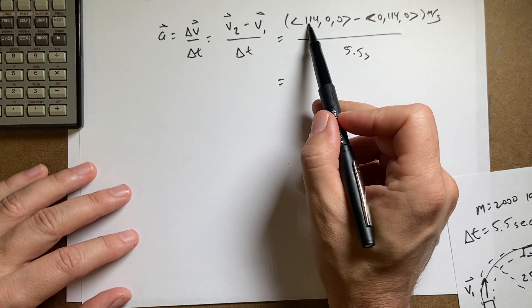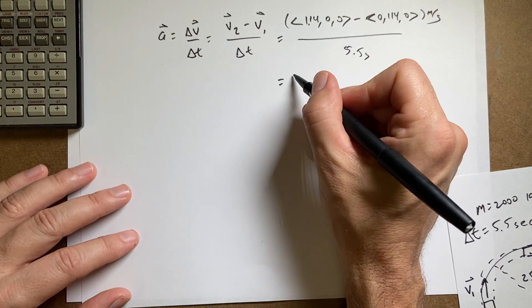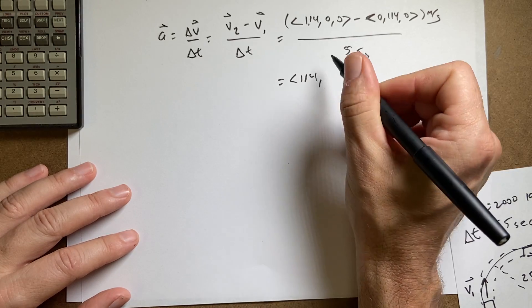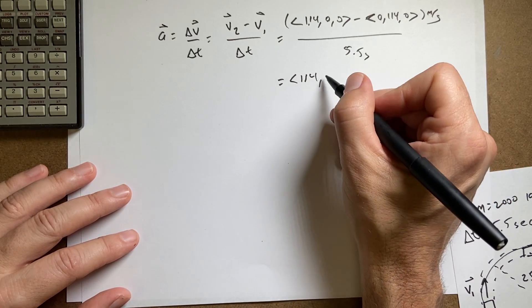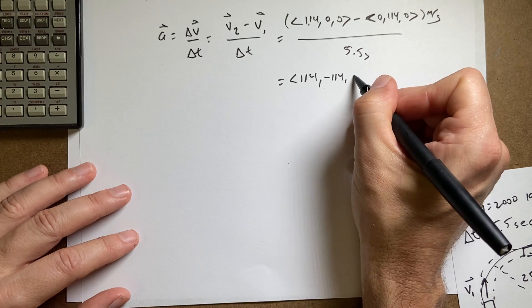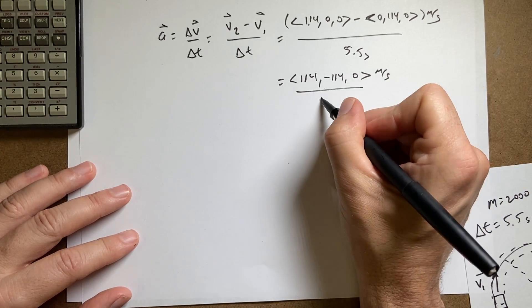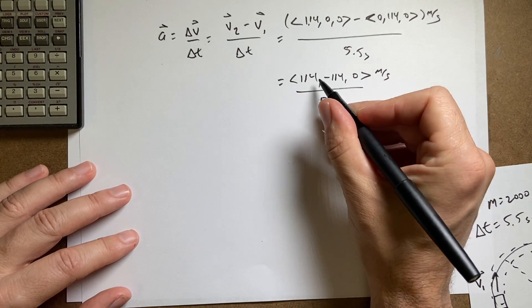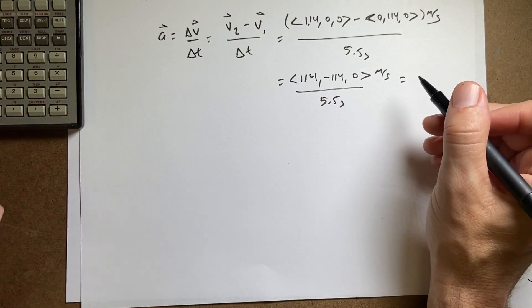So in order to subtract vectors, I say 114 minus 0, 114, 0 minus 114, negative 114, 0 meters per second, divided by 5.5 seconds. So then I'm going to divide each of these by 5.5 seconds.